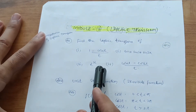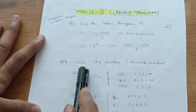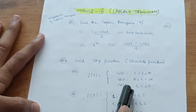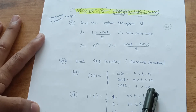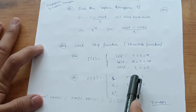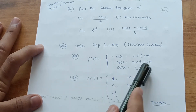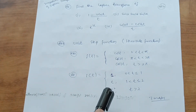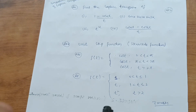The most important question in this module — don't leave it — is the Unit Step Function, also called the Heaviside Function. Questions will be: express f(t) = {cos t, cos 2t, cos 3t} for limits 0 < t < π, π < t < 2π, t > 2π in terms of the Heaviside function and find its Laplace transform. Another: f(t) = {1, t, t²} for 0 < t ≤ 1, 1 < t ≤ 2, t > 2. At least 14 out of 20 marks can come from this chapter.